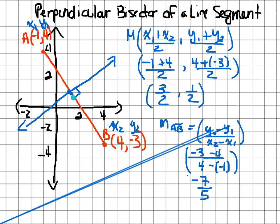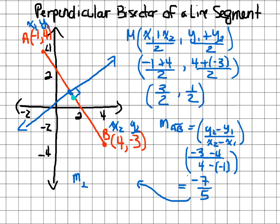That gives us -7/5. This makes sense because the line goes down to the right, so it should have a negative slope. There's no problem with a fractional slope. Since the slope of AB is -7/5, the perpendicular slope is the negative reciprocal: we flip the fraction and change the sign, giving 5/7.